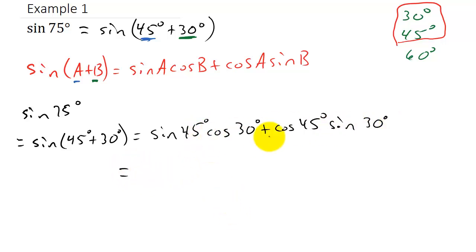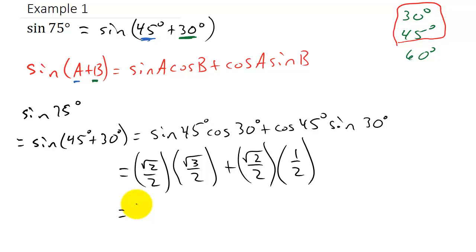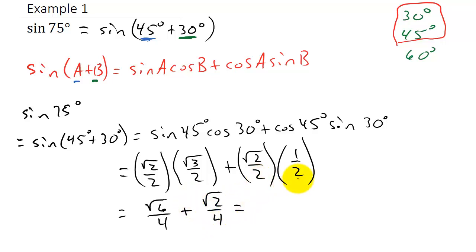We can evaluate this because we know sine of 45, cosine of 45, and the cosine and sine of 30 degrees. The sine of 45 is square root of 2 over 2, times the cosine of 30 which is square root of 3 over 2, plus the cosine of 45 which is square root of 2 over 2, times the sine of 30 which is 1 half. Multiplying, we get square root of 6 over 4, plus square root of 2 over 4, giving us square root of 6 plus square root of 2, all over 4.